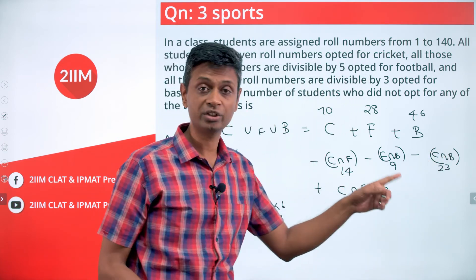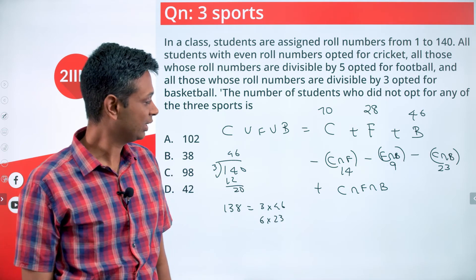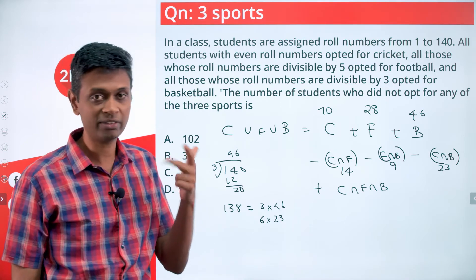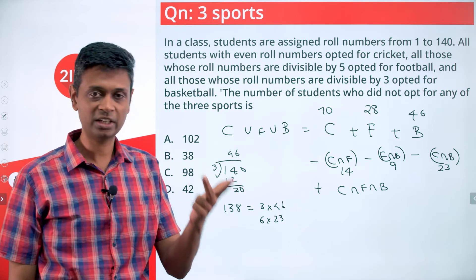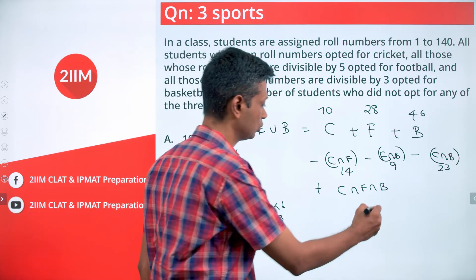Cricket intersection football intersection basketball: multiples of 2, 3, and 5, which are multiples of 30 (30, 60, 90, 120). That's 4 numbers.